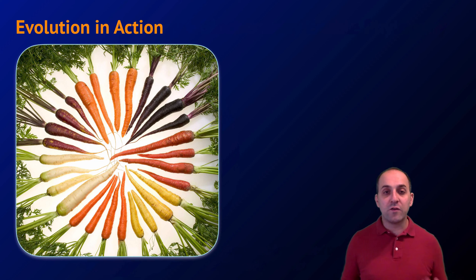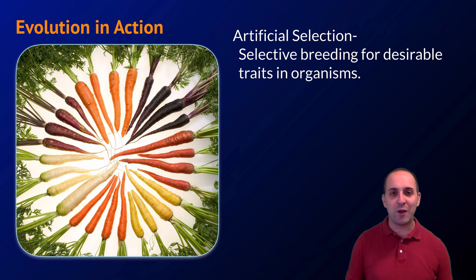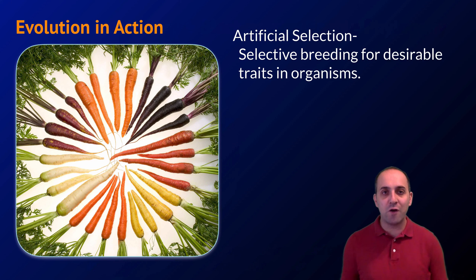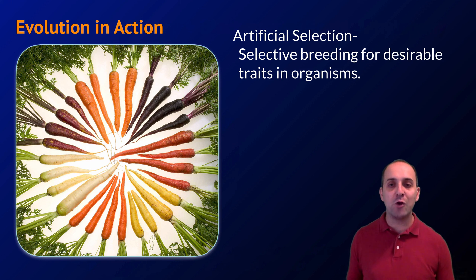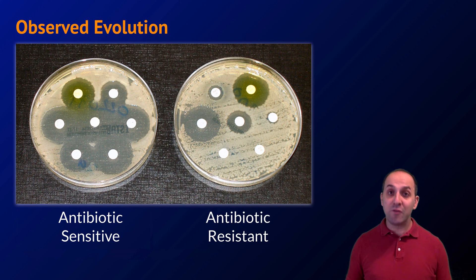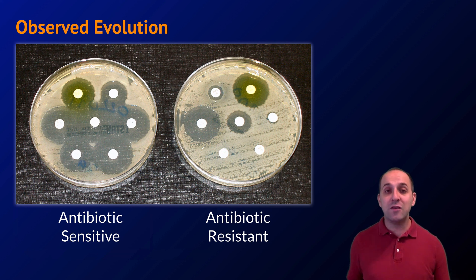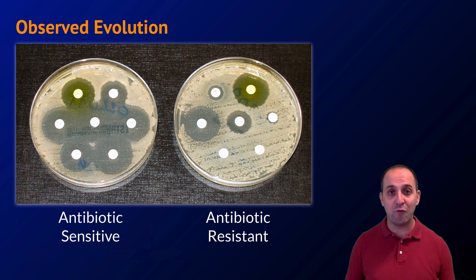The last type of evidence we're going to talk about is examples of evolution in action. We've already looked at some examples when we discussed natural selection, but here are a couple more. These are different cultivated carrots produced by humans — an example of artificial selection, where organisms are bred by humans for desirable traits. We can see that in carrots, in fancy pigeons, and in our pets. There have also been many examples of observed non-artificial natural selection in action since scientists have started looking for it.